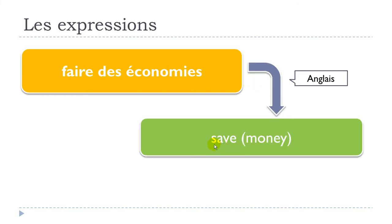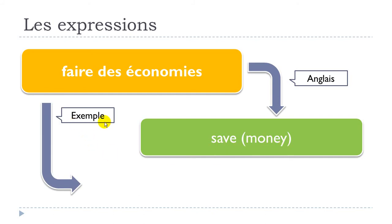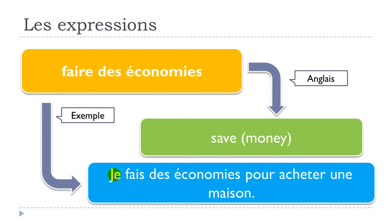The translation in English is right here, and let's see an example: je fais des économies pour acheter une maison — je fais des économies pour acheter une maison. So: I save some money to buy a house. Acheter means 'to buy' and une maison means 'a house'.